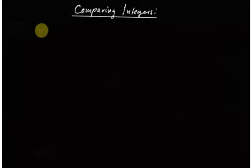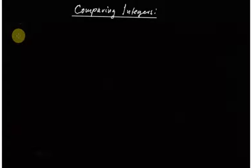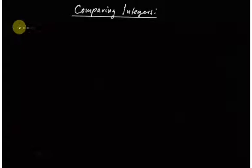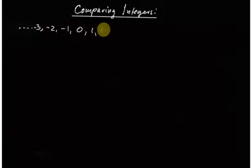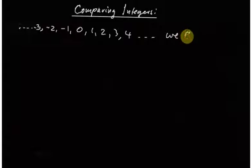Welcome. Now that we know what the integers are, it's a good time to have a look at them and compare them. To compare integers, we will have to draw a number line. We know integers are negative numbers, zero, and natural numbers. So it goes from somewhere in the negative numbers — negative three, negative two, negative one, zero, one, two, three, four.